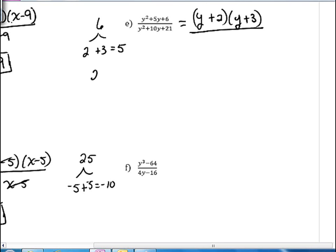For the denominator, we want to factor the 21, the plain old number, so that the sum will give us the number in front of our x term, which is 10. The two numbers that will multiply to give you 21 and add to give you 10 are 3 and 7. So this will factor as y plus 3 times y plus 7.